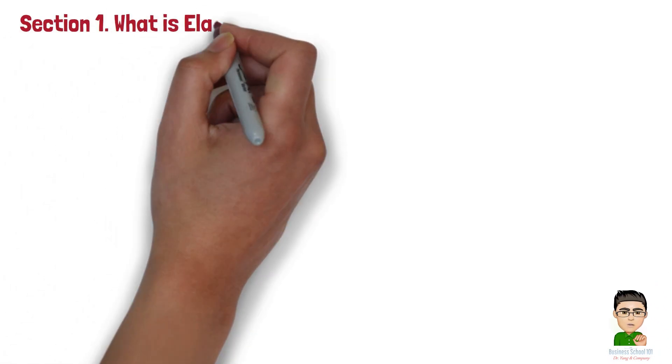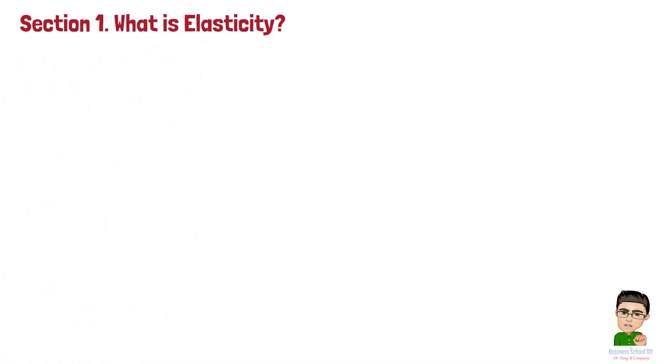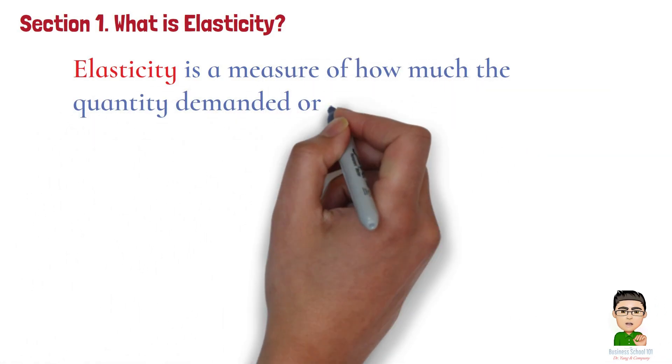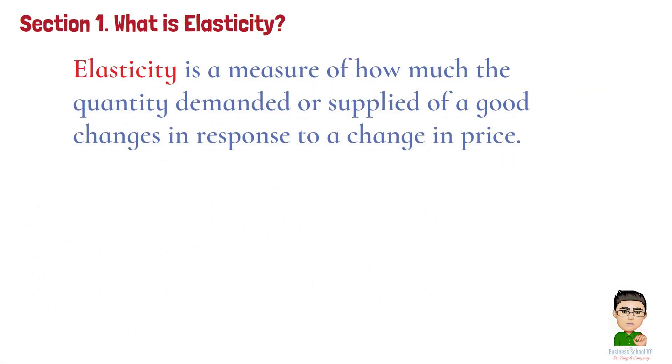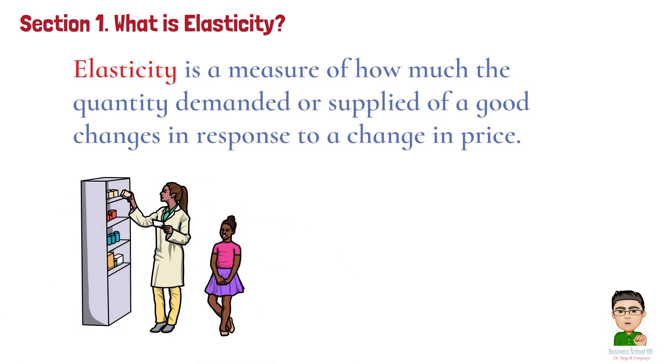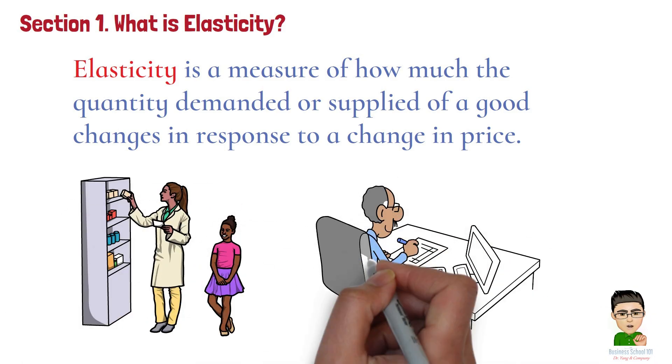Section 1: What is Elasticity? Let's start with the basics. Elasticity is a measure of how much the quantity demanded or supplied of a good changes in response to a change in price. It tells us how sensitive consumers and producers are to price changes. There are two major types of elasticity in economics.